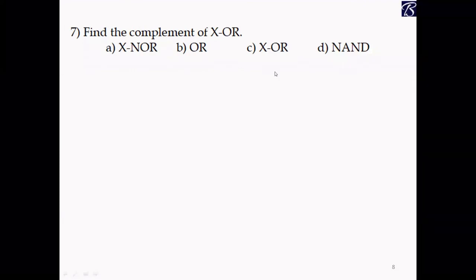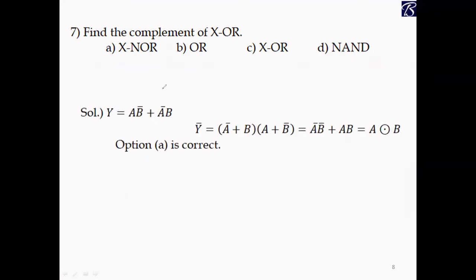Problem 7: We need to find the complement of XOR. We know the complement of XOR is XNOR. But if a general expression is given, the procedure is: first find the dual of the given expression, then complement each variable. The XOR operation expression is AB̄ + ĀB, which equals Y.